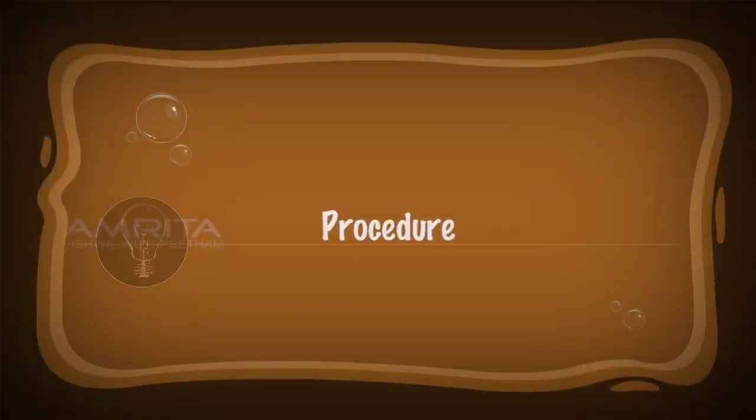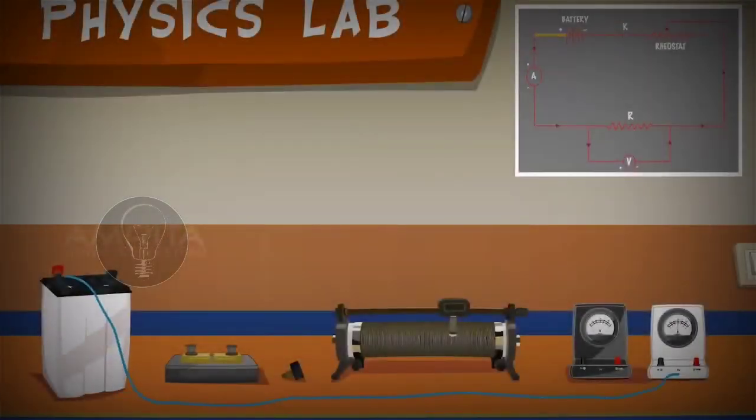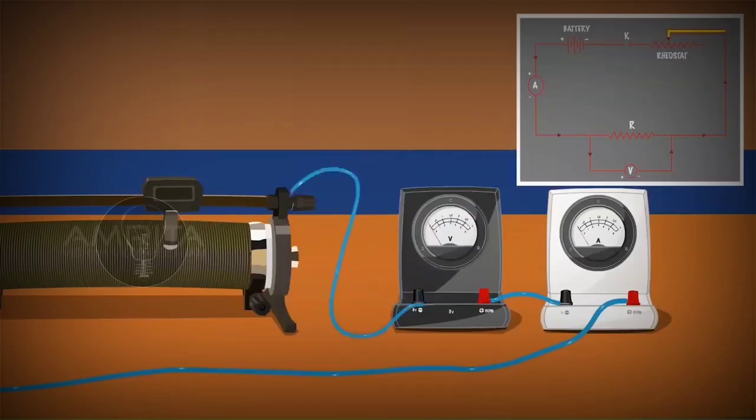Procedure. Connect the positive terminal of a battery to the positive terminal of ammeter using a connecting wire. Connect the negative terminal of the ammeter to the positive terminal of the voltmeter. The negative terminal of the voltmeter is connected to the upper terminal of the rheostat using a piece of wire.